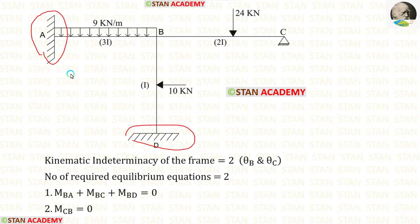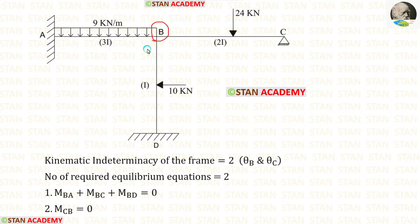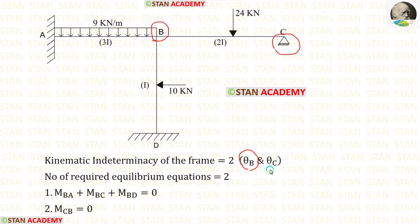At the fixed supports, there will be no deflection and no slope. Point B is a joint where there will be slope, that is theta B. In point C, there is a hinged support — there will be no deflection, but there will be slope, so we have theta C.